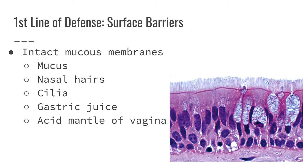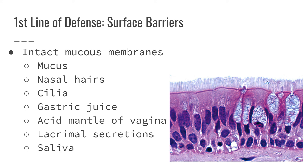Like the skin's acid mantle, the vagina has its own acid mantle that helps prevent bacteria or fungus from growing where we don't want it. Lacrimal secretions — also known as tears — are similar to saliva; both help to lubricate and cleanse, and they contain lysozyme, which is an enzyme that can destroy invading microbes. Urine is also acidic, which prevents bacterial growth, and the act of urinating helps cleanse and flush out anything unwanted. So our skin and intact mucous membranes serve as our first line of defense.